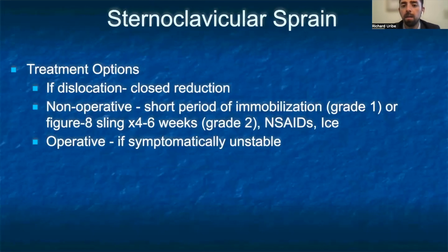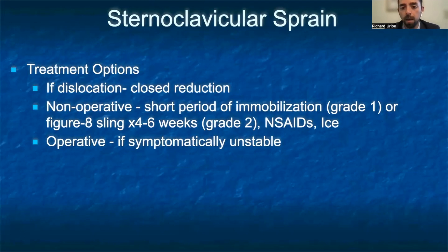Treatment options depend on severity. If there is a significant dislocation, the next step is closed reduction of the joint. Non-operative management is preferable and entails a short period of immobilization for grade 1, or a 4-6 week immobilization with a figure-8 sling for grade 2. Pain management can be done with NSAIDs and ice as needed. If the joint is symptomatically unstable, the preferred treatment is operative management.